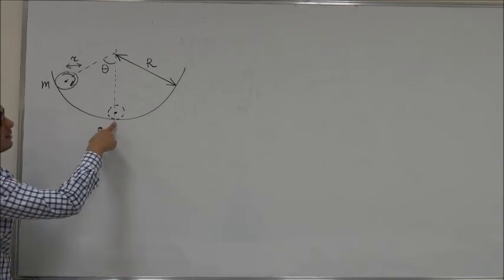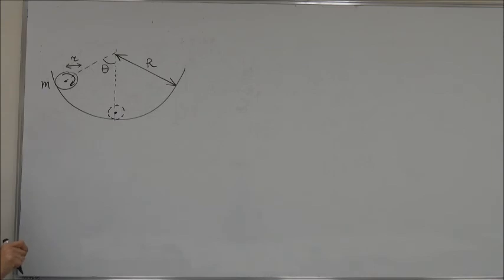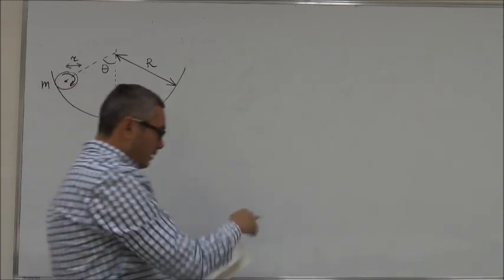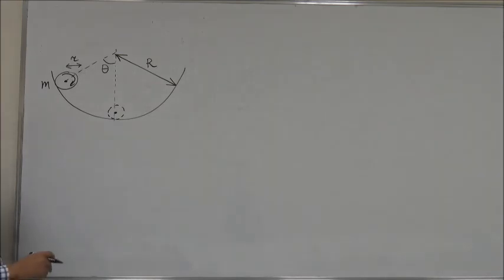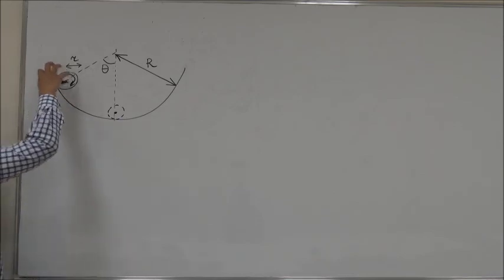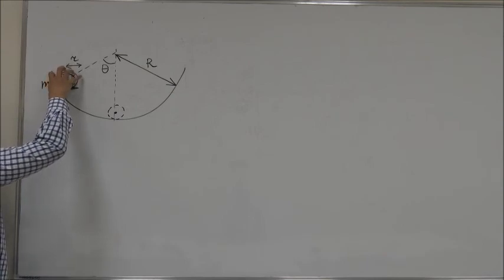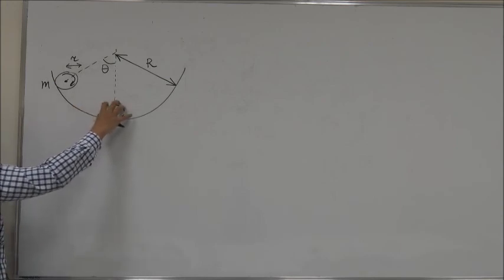The question is, what is the speed of the ball at the very bottom? What we can use here is the conservation of energy, conservation of mechanical energy. The gravitational potential energy that we have here is converted into the kinetic energy at the bottom.